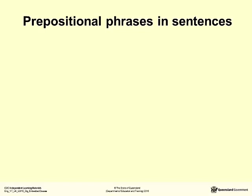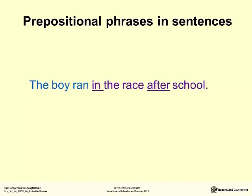Let's take a look at this simple sentence: 'The boy ran.' But where did the boy run? The reader needs to know the where and the when of the situation because there's simply not enough information here. This is where a prepositional phrase can come in handy because it can provide further description. How about 'the boy ran in the race'? This sentence is much better because it tells us where the boy ran. But it still doesn't tell us when he ran in the race, so we need to add more description: 'The boy ran in the race after school.' Now we know when the boy ran, giving the reader more information about the situation.